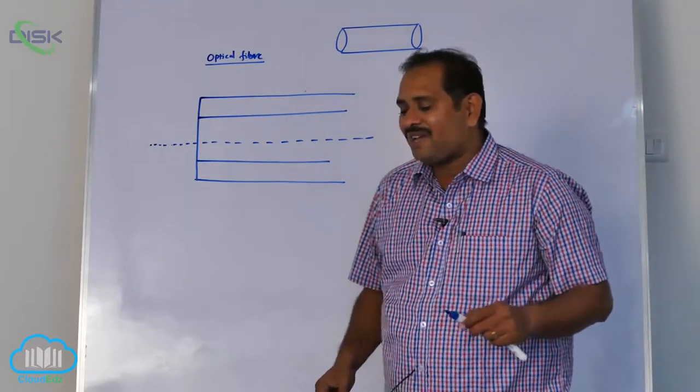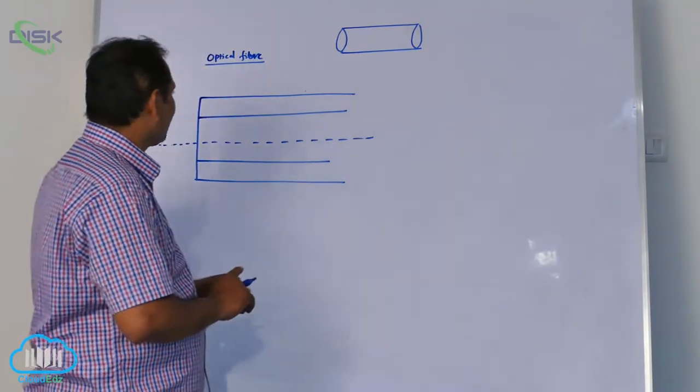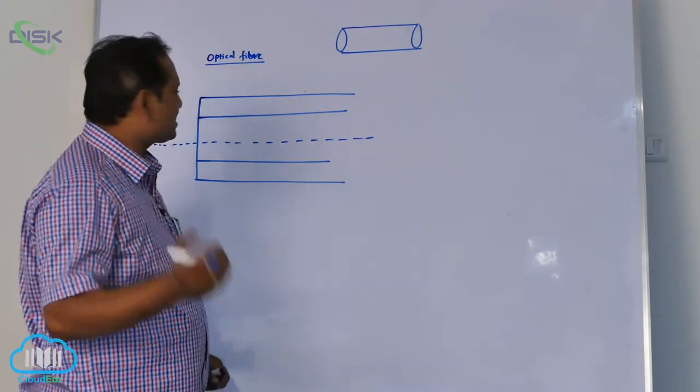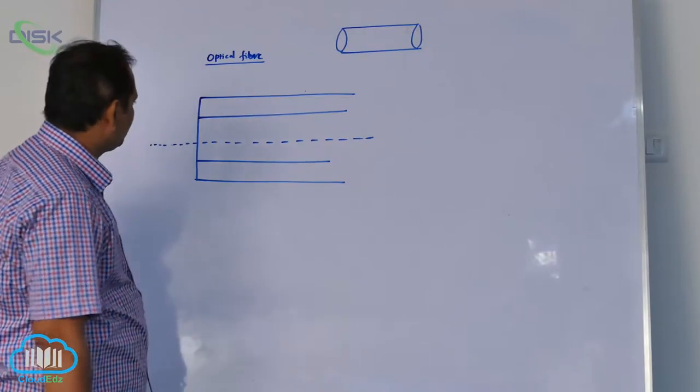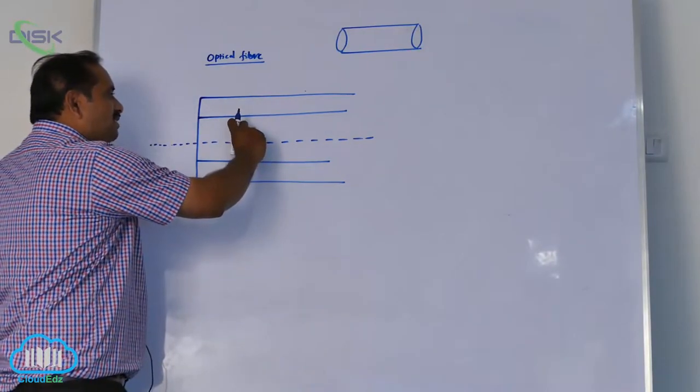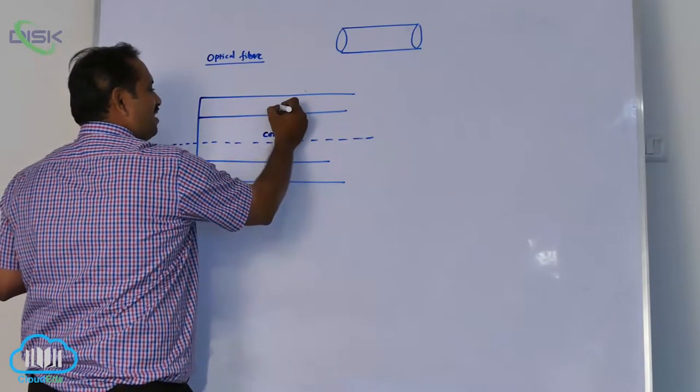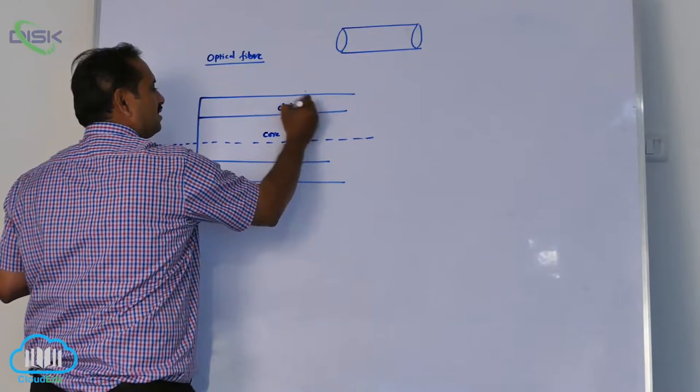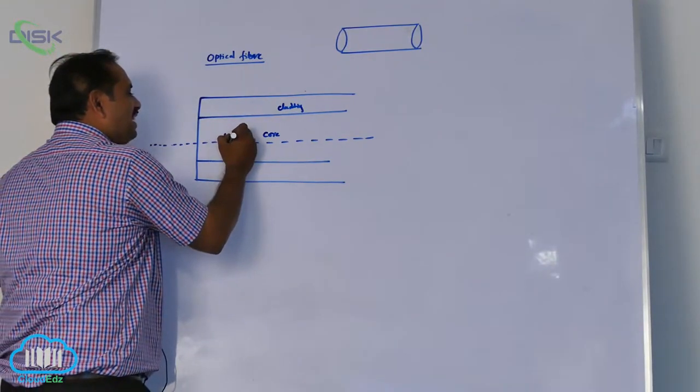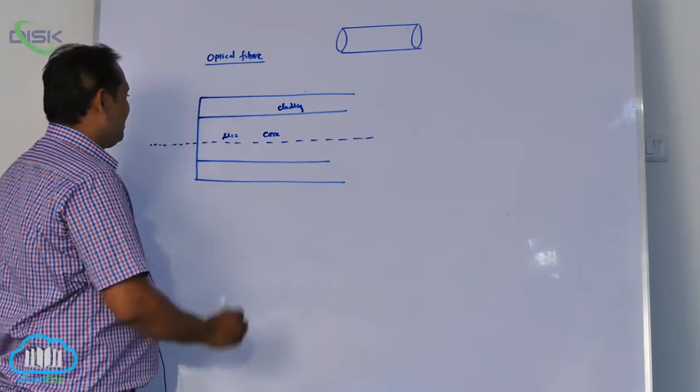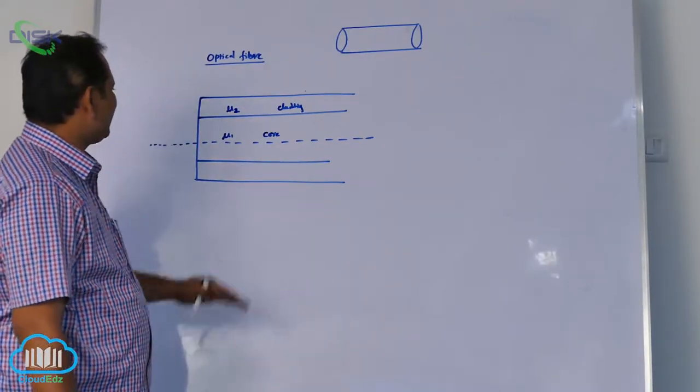To understand optical fiber, I gave television cable example, but your fiber size is not television cable size. It is one-sixth of the hair size, micron size. It is minute in size. These are the two coaxial cables. This is the axis of the coaxial cable. Inside part is called core. The outer layer is called cladding. This core refractive index is mu1, and cladding refractive index is mu2.